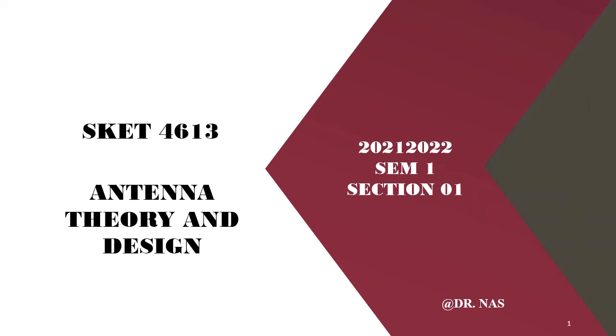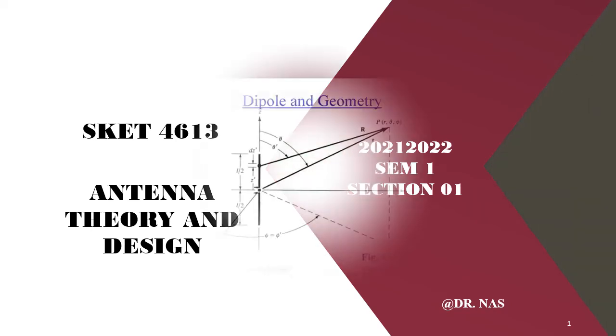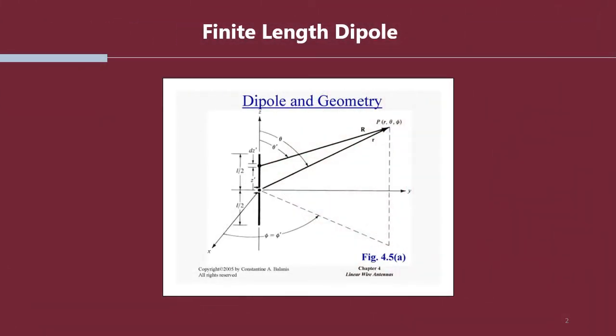Assalamualaikum and a very good morning. We have seen the infinitesimal dipole in the previous slide. Now we are going to discuss the finite length dipole when L is between lambda over 50 to lambda over 10.